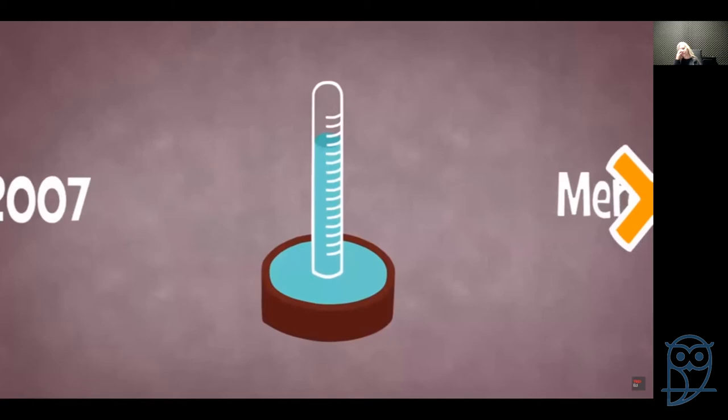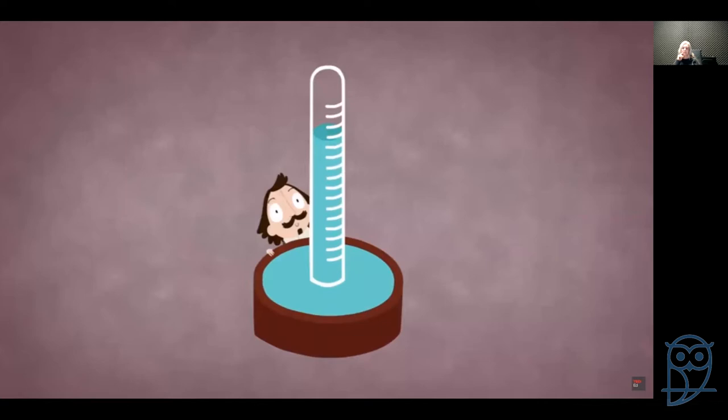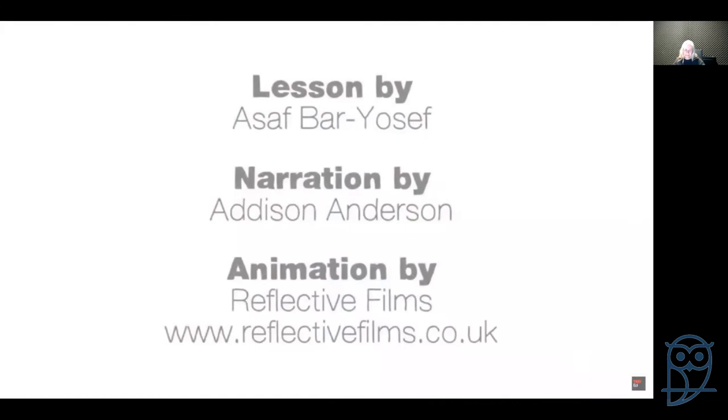Torricelli repeated Berti's experiment with mercury instead of water. Because mercury was denser, it fell farther and the mercury column stood only about 76 centimeters tall. This allowed Torricelli to make the instrument much more compact, and it supported his idea that weight was the deciding factor. The ultimate support came via Blaise Pascal, who had a mercury tube taken up a mountain and showed that the mercury level dropped as atmospheric pressure decreased with altitude.